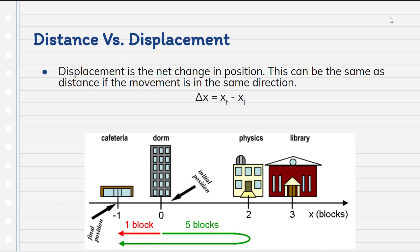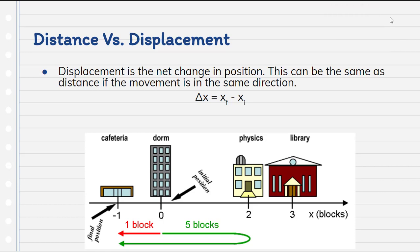We go from the dorm to physics class, and then we're hungry after physics, so we go to the cafeteria. Going from the dorm to physics class is five blocks, and then from physics to the cafeteria is six blocks. The total distance is 11 blocks. The displacement, however, is the net change in position. Even though I went five blocks to physics and then six blocks to the cafeteria, my total displacement is negative one block because my final position is one block behind my initial position. Distance is always positive; displacement can be positive or negative.